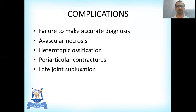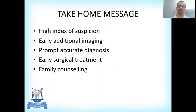These fractures can be associated with severe complications, often due to failure to make an accurate diagnosis. Complications include avascular necrosis, heterotopic ossification around the elbow, periarticular contractures leading to elbow stiffness, and late joint subluxation especially of the radiocapitellar joint. In summary, when you see a radiograph that appears relatively normal or shows only a fleck of bone that doesn't match the clinical examination, maintain a high index of suspicion for TRASH lesions. Consider early additional imaging such as MRI or arthrogram. Once an accurate diagnosis is made, early surgical treatment is needed, and families should be counseled that despite best treatment, results may not always be satisfactory.